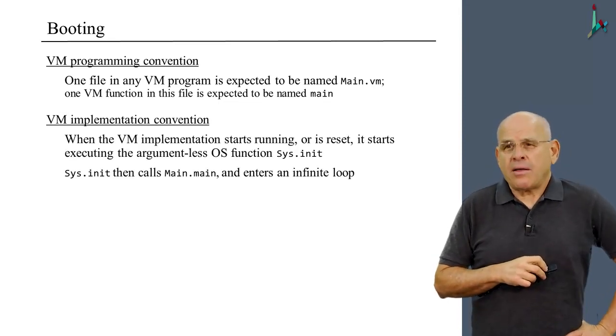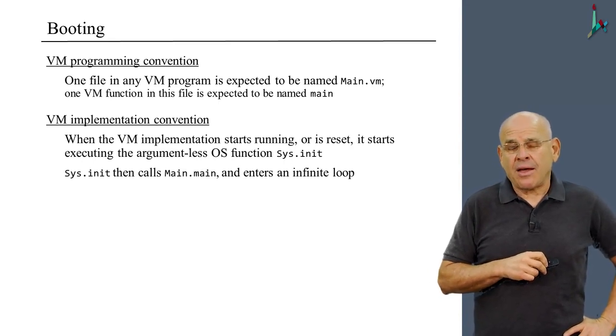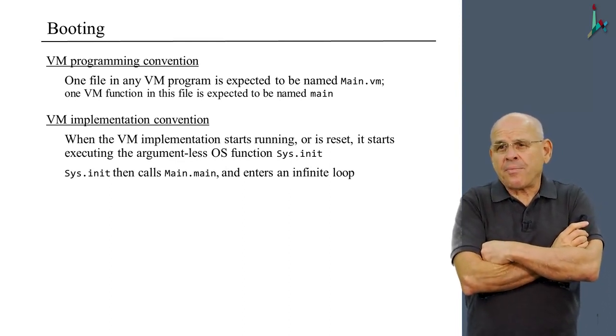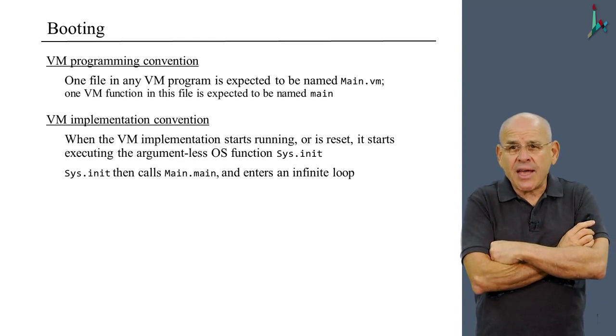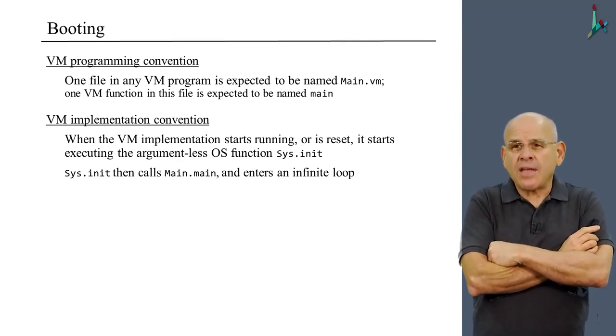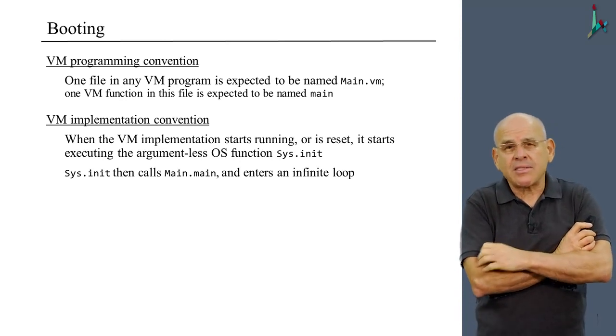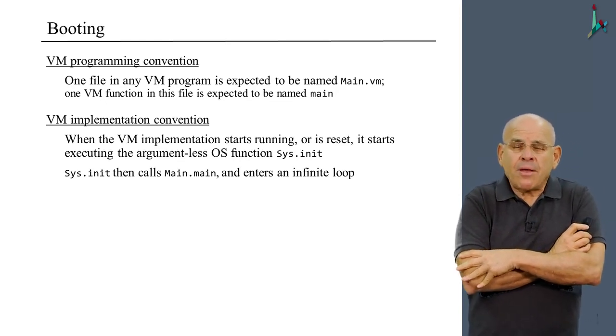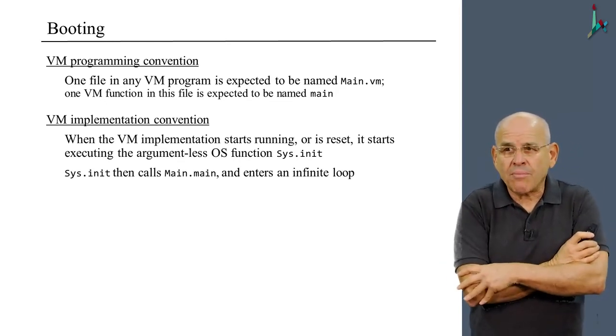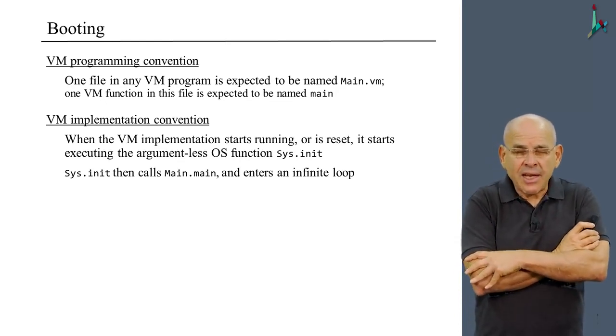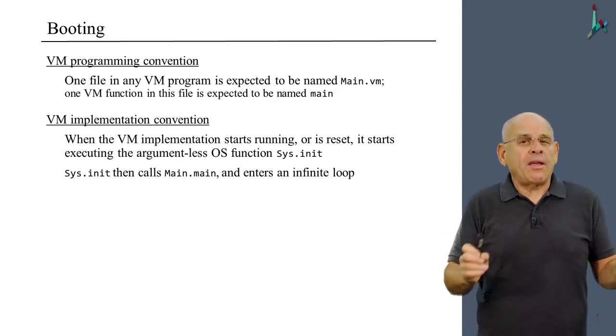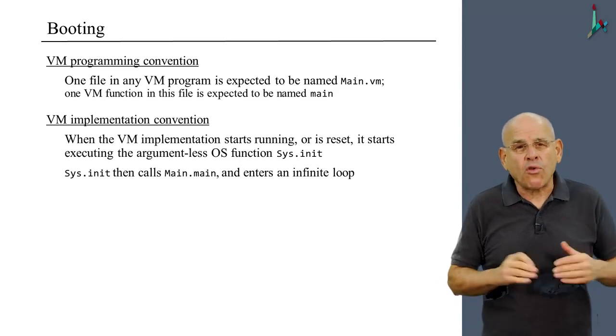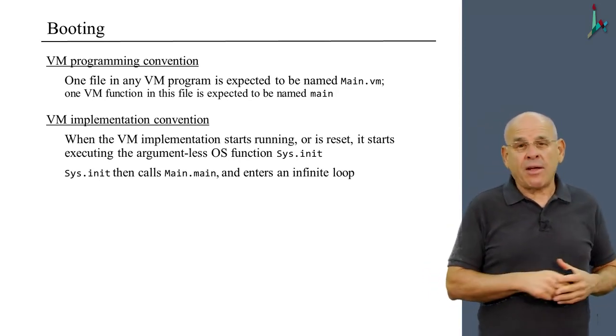Then we need a certain convention in the implementation. In our case, in the VM translator. When the VM implementation starts running or is reset, it has to start executing an argument-less operating system function called sys.init. The VM implementation must begin with this code. It must call sys.init. sys.init is already programmed at the OS level, which is not our business right now. sys.init is already programmed to call main.main and enter an infinite loop.